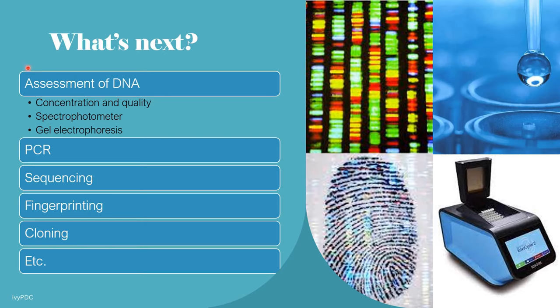So after performing the three steps in DNA extraction, what's next? For further laboratory work, it is important to know the concentration and the quality of the DNA. Spectrophotometric readings may be used to determine the concentration and the purity of the DNA sample. Alternatively, gel electrophoresis can also be used to show the presence of the DNA in the sample and to give an indication of its quality. Once successful extraction is done, we can proceed to other molecular analyses including PCR, sequencing, fingerprinting, cloning, and so on.